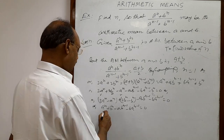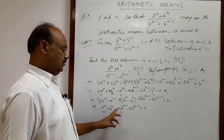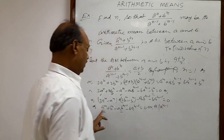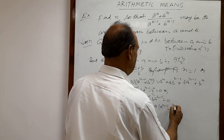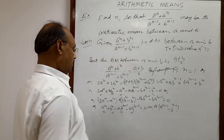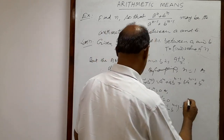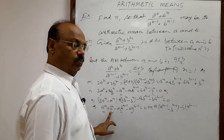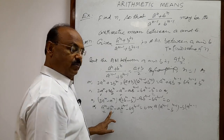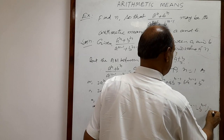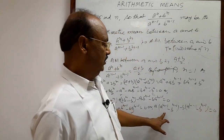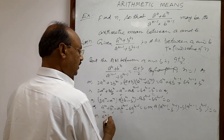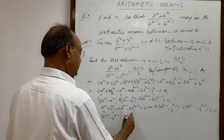Again we will rearrange and make a grouping. We take these two terms and take a common from them. By taking a common from the first two terms we get a times the quantity a to the power n minus 1 minus b to the power n minus 1. Then taking minus b common from the remaining two terms: minus b times the quantity a to the power n minus 1 minus b to the power n minus 1 equals 0. Now these two bracket expressions are the same, so we can take a to the power n minus 1 minus b to the power n minus 1 common, giving us that quantity times a minus b equals 0.